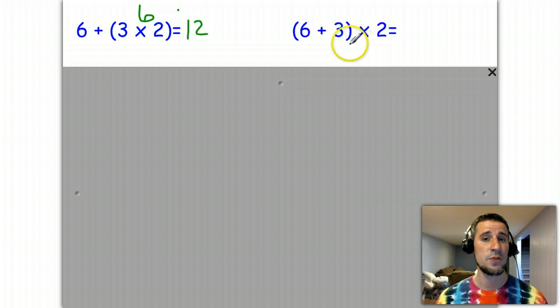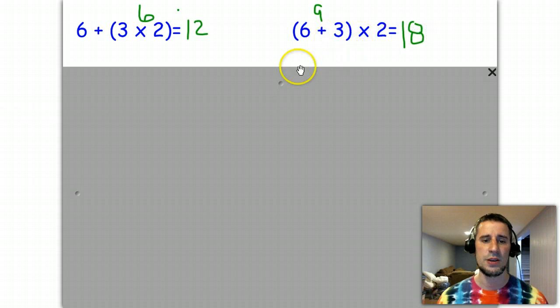Same numbers, different place for the parentheses. Let's do the parentheses first - always parentheses first. 6 plus 3 will give me 9, but this time 9 times 2 is going to give me 18. Notice you get different answers all because of the parentheses.